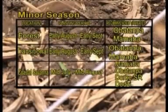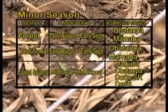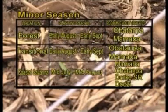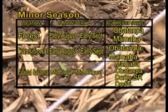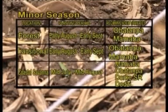Minor season: in the forest agroecology, the planting period is between early August to early September; the recommended varieties are Obatampa and Mamaba. In the transitional area, the planting period is also early August to early September, with Obatampa and Mamaba recommended. In the coastal savannah, the planting period is mid-July to mid-August, and the recommended varieties are Mamaba, Obatampa, Docker SR, and Doji.